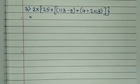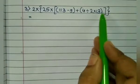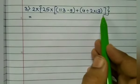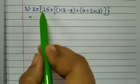Now see this example with nested brackets: 2 into curly bracket 25 into square bracket 113 minus 9 plus (4 divided by 2 into 13) square bracket close curly bracket close.